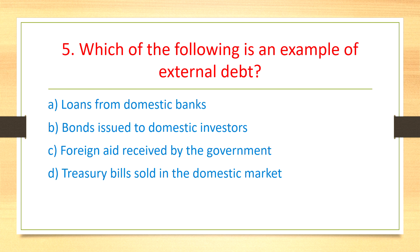Question 6: Which of the following is an example of external debt? Options include: loan from a domestic bank, bond issued to domestic investors, and foreign aid received by the government. Foreign aid received by the government is an example of external debt.